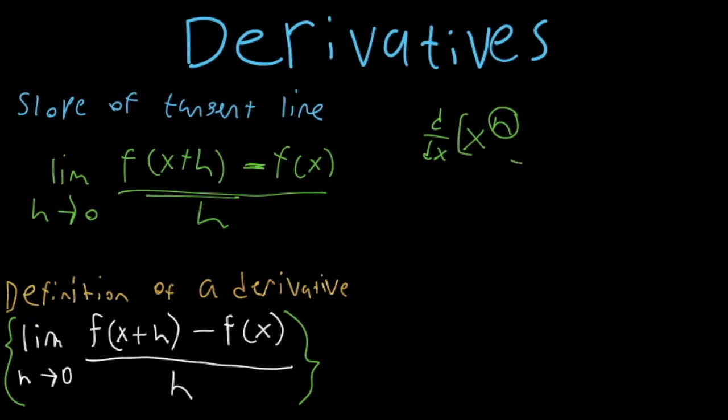the derivative of this value right here is going to equal n times x to the n minus 1. So you just take whatever this power is here and bring it to the outside and multiply it by the original coefficient right there or the original value and then subtract 1 from the exponent. So let's use that same example we just had. 5x to the 10th plus 3.